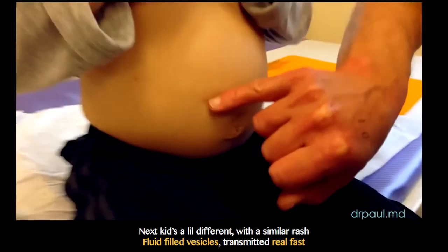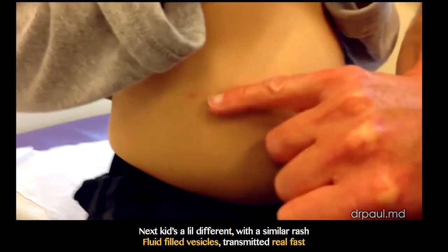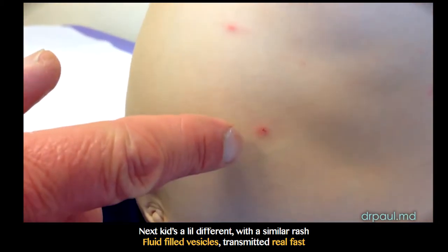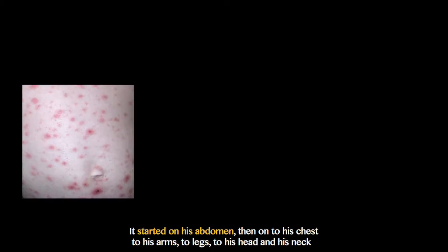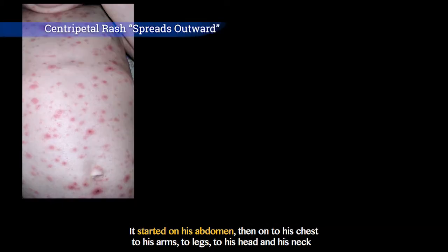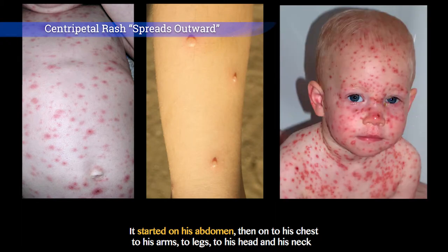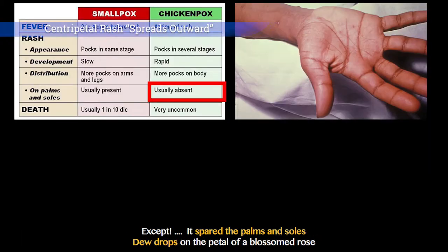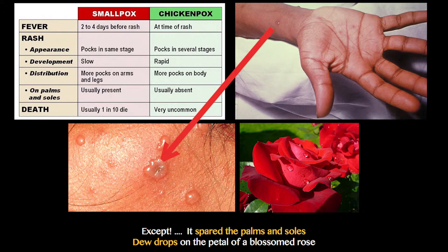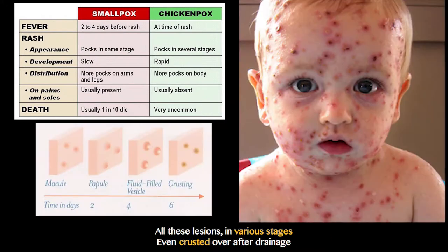Next kid's a little different with a similar rash — fluid-filled vesicles transmitted real fast. It started on his abdomen and on to his chest, to his arms, to his legs, to his head and his neck. Except it spared the palms and soles — drops on the petal of a blossom rose. All these lesions in various stages, even crusted over after drainage.